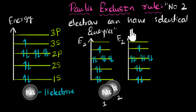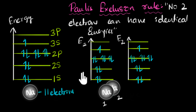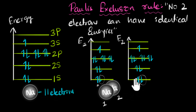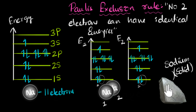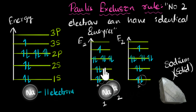Pauli says no two electrons can have identical energies — and this applies not just inside a single atom, but inside a molecule, or even inside an entire solid. So if two sodium atoms each have the same electronic configuration, this electron and that electron will be absolutely identical. All of them will have identical pairs, and Pauli will be very, very sad. If we have an entire sodium solid with 10²³ atoms, there would be 10²³ identical copies of electrons at each level — which is impossible.